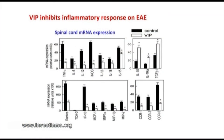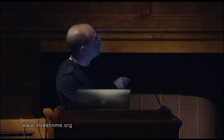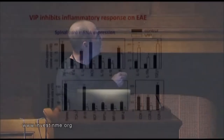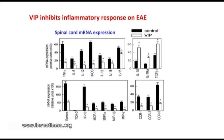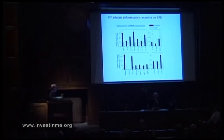The mechanisms are straightforward and were previously proposed in vitro. In mice with disease, there is a panel of inflammatory mediators and chemokines in the spinal cord. When treated with VIP, there is a reduction of the inflammatory response, a reduction of chemokines, and an induction of anti-inflammatory mediators.